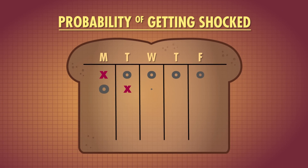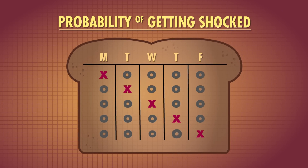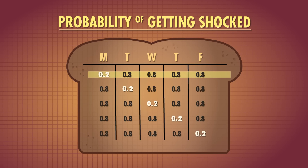There are five different ways you can receive only one shock this week. You either get shocked once on Monday, Tuesday, Wednesday, Thursday, or Friday, and then remain shock-free on the other four days. If we represent a shock with an X and a non-shock day with an O, we need to calculate the probability of getting one shock and four non-shocks using the multiplication rule. The probability of getting shocked is twenty percent, so the probability of not getting shocked is eighty percent each remaining day. So the probability of getting shocked on Monday and not on Tuesday through Friday is 0.2 × 0.8 × 0.8 × 0.8 × 0.8, which equals about 0.082.